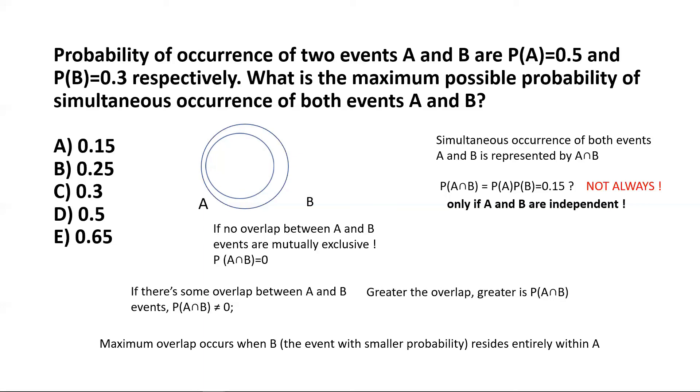And that really represents the case when I have the maximum possible probability of simultaneous occurrence of both events. So the area of overlap here is simply the entire circle B right. So it's the entire event B. So the probability of A intersection B in this limiting case would be simply the probability of the event B itself and that's 0.3. So that's the maximum value. So the correct choice in this case will be option C, 0.3.